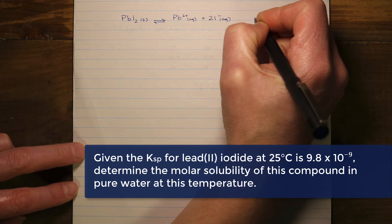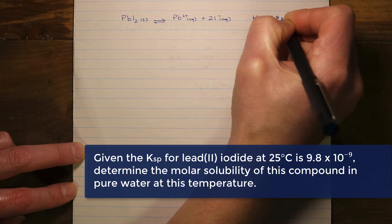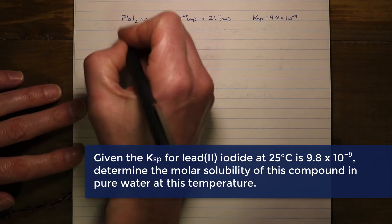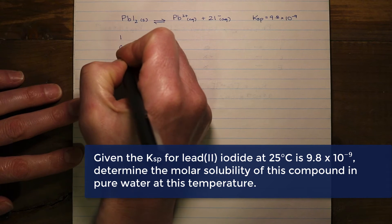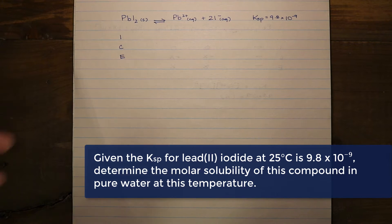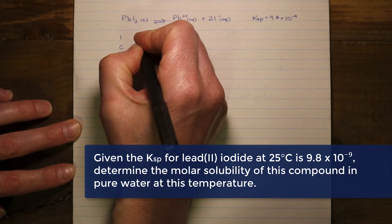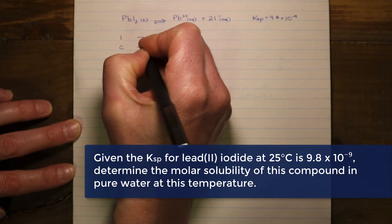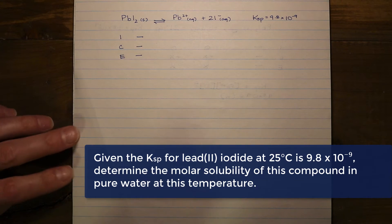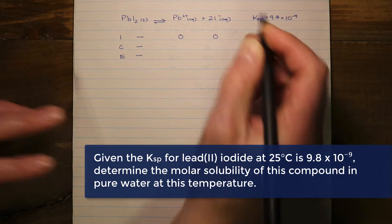I've included the Ksp just for reference, and since we know the Ksp, we need to set up an ICE table. The key difference here is that the reactant side contains a solid, so we only track the concentrations of the ions. Since we're adding a solid, the initial concentrations of those ions are zero — they haven't formed yet because initially we've just added the solid.